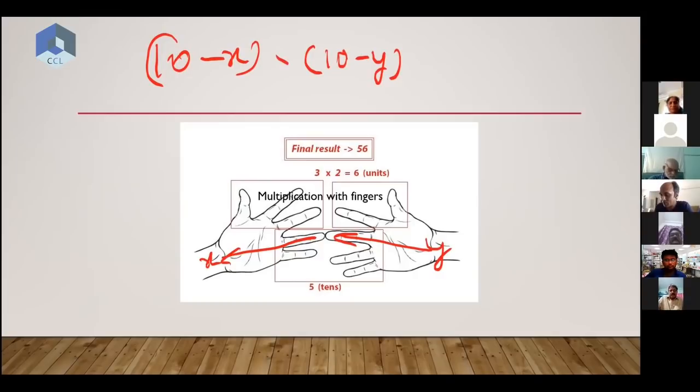Then you have three fingers on top - if this is seven, you have three fingers on top. If this is eight, you have two fingers on top: 10 minus 8 and 10 minus 7. All right, multiplying that, what will you get? You will get 100 minus 10x minus 10y plus xy. All right, I hope you can see that.